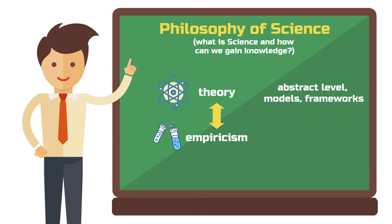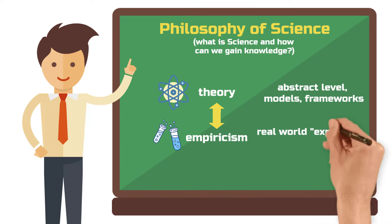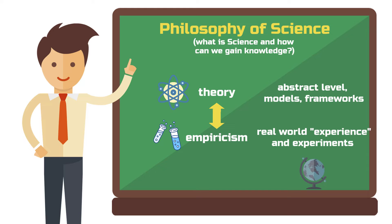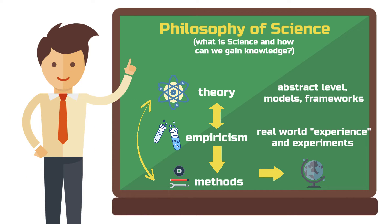Theory preserves knowledge at an abstract level and provides frameworks for understanding specific phenomena. It waits to be challenged, strengthened, refuted or refined by new insights. Empirical investigations are situated one level below theory, closer to the real-world subject. Methods are the tools and practices used to acquire new knowledge based on real-world phenomena. This process can inform theory and vice versa.